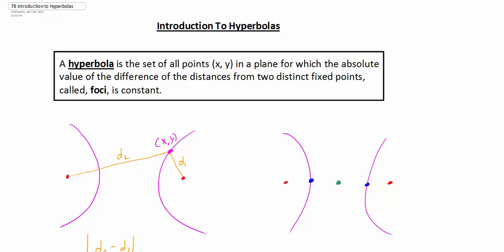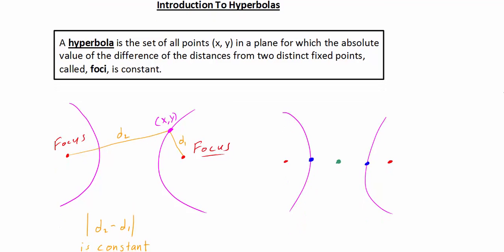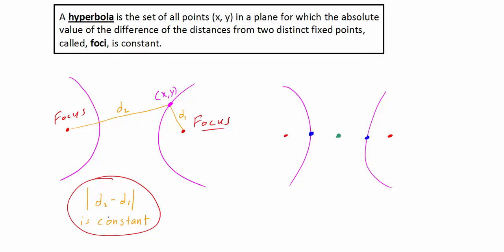Now we're going to look at hyperbolas, and we're going to describe these using a set of points. The definition of a hyperbola is the set of all points (x, y) in a plane for which the absolute value of the difference of the distances from two distinct fixed points called the foci is constant. Here we have our hyperbola with a horizontal axis, and the two foci are our distinct fixed points. Going from one focus to a point on the graph and then to the other, the absolute value of d2 minus d1 remains a constant difference.